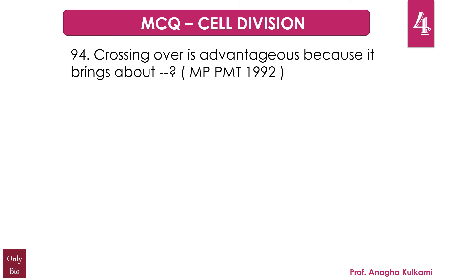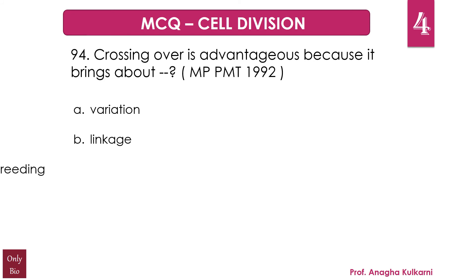The next question asks why crossing over is advantageous. The options are A. Variation, B. Linkage, C. Inbreeding, D. Stability. The correct answer is A. Variation. This also helps in evolution, and it is the most significant feature of meiosis.